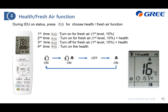The healthy and fresh air function toggles through options when you press this button. The 'healthy' option turns on the cold plasma, while the 'fresh air' option turns on the air damper. On the wireless remote controller, the corresponding LED indicators will display accordingly.